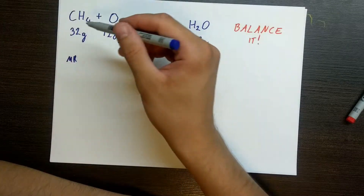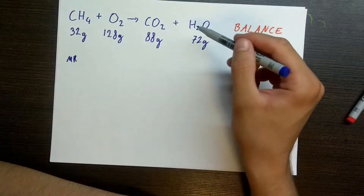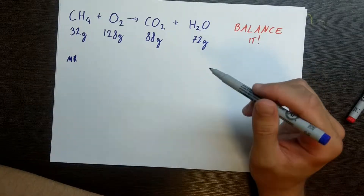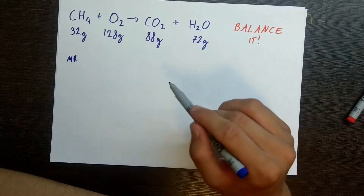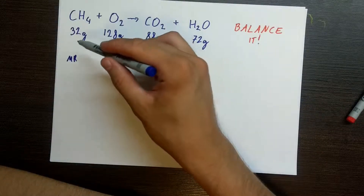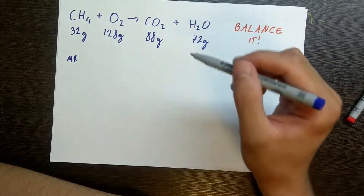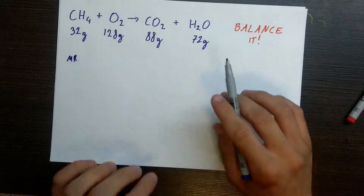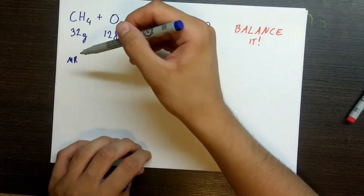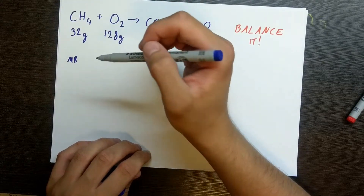Now, if you watched my previous videos you could probably just balance this equation yourself without even looking at the masses. But if the equation is particularly difficult, or if you came up with a new equation that was undiscovered before, you would need to experiment with the masses in order to find the balanced version. So, as always, first things first — I like to figure out the molecular masses first.